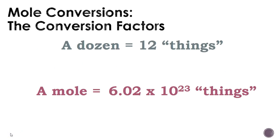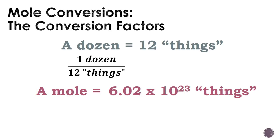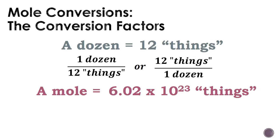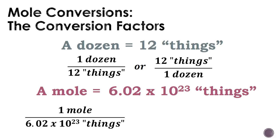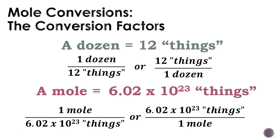How can we use a mole in chemistry? We can use moles in different conversions and make conversion factors about them. We're going to relate a dozen, which is 12 things, and a mole to show the relationship. For a dozen, you could say 1 dozen equals 12 things, or 12 things equals 1 dozen. When talking about a mole, you could say 1 mole equals 6.02 times 10 to the 23rd things, or flip that around. These are the conversion factors you use to solve mole problems.